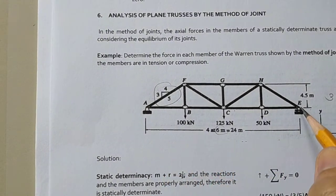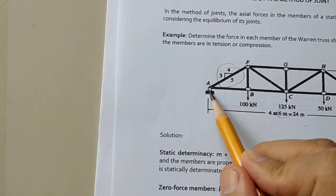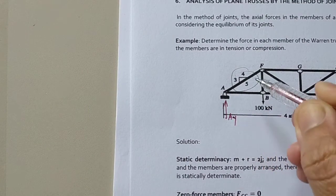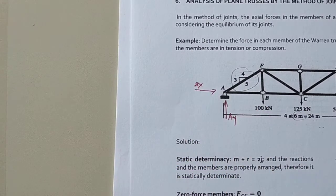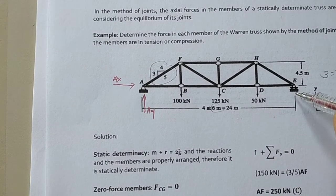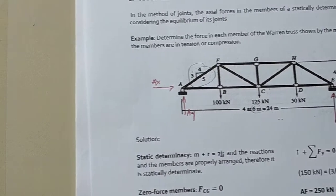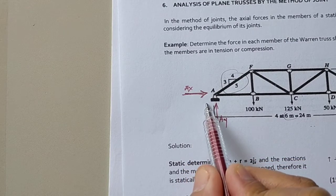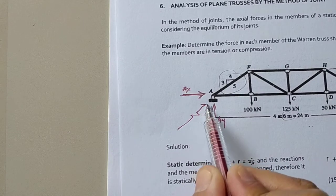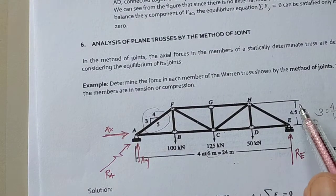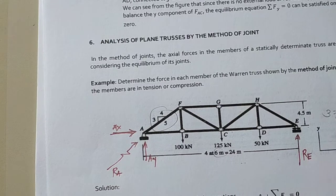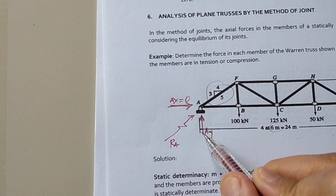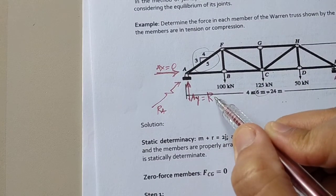We have a roller at point E and a pin at point A. At the pin we have vertical reaction Ay and horizontal reaction Ax. For the roller, the reaction is perpendicular to the surface — vertical. Since there is no horizontal external force acting on the structure, Ax equals zero, and the vertical component RA is the main reaction at A.